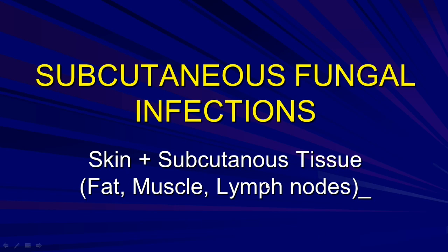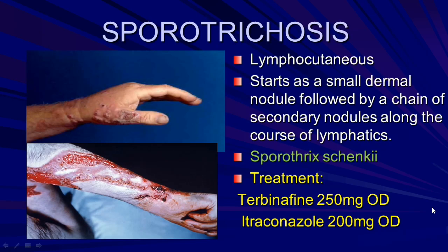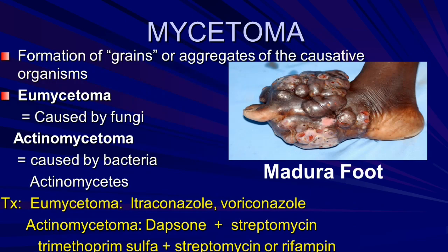Subcutaneous fungal infections involve skin, subcutaneous tissue, fat, muscle, and bone. Sporotrichosis presents with multiple nodules and a chain of secondary nodules along the course of the lymphatics. The organism is Sporothrix schenckii. Treatment: terbinafine 250 mg once a day or itraconazole 200 mg once a day. Mycetoma: the organism is Madurella mycetomatis; antifungal treatment is given.